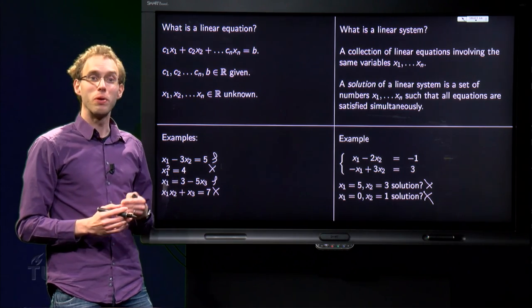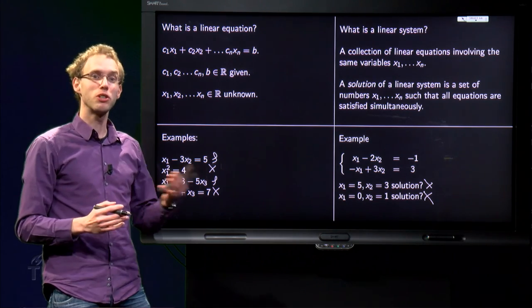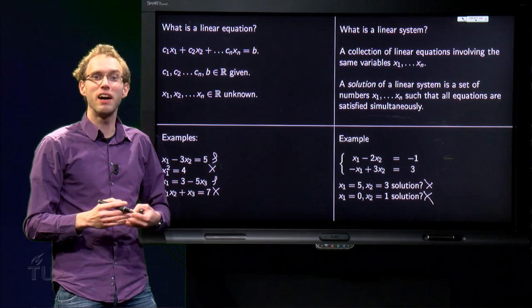So the solution of this system would be X1 equals 3 and X2 equals 2. So now we know what a linear equation is, what a linear system is, what a solution is. Of course you want to know now how to find it, but that will be subjects of later videos.